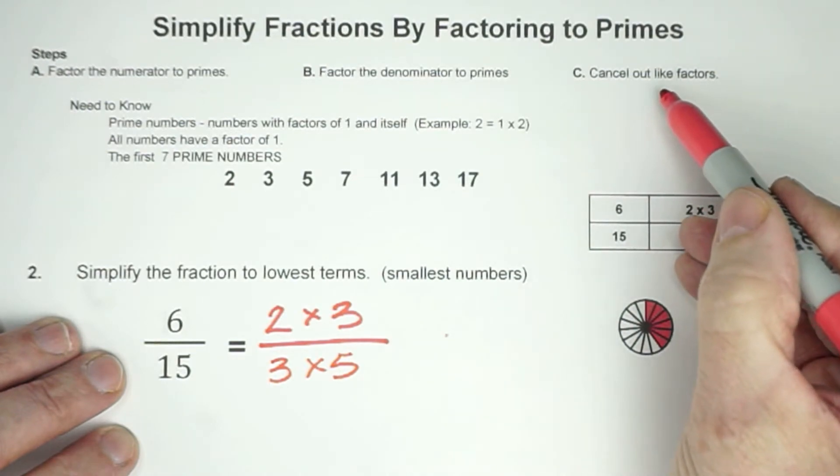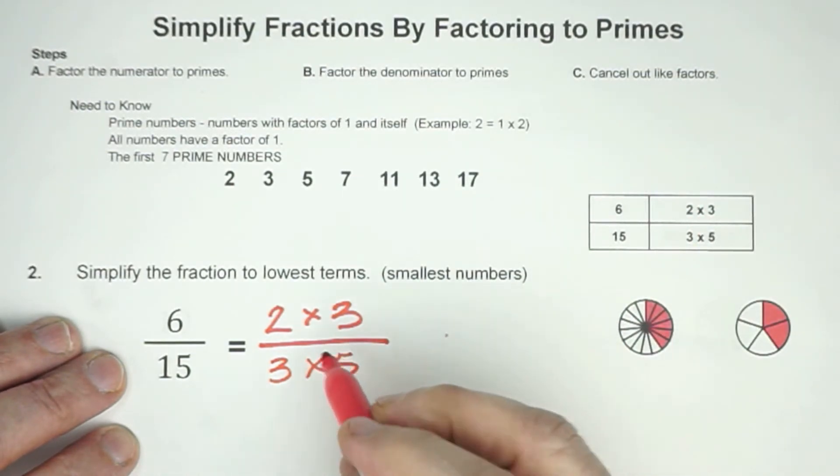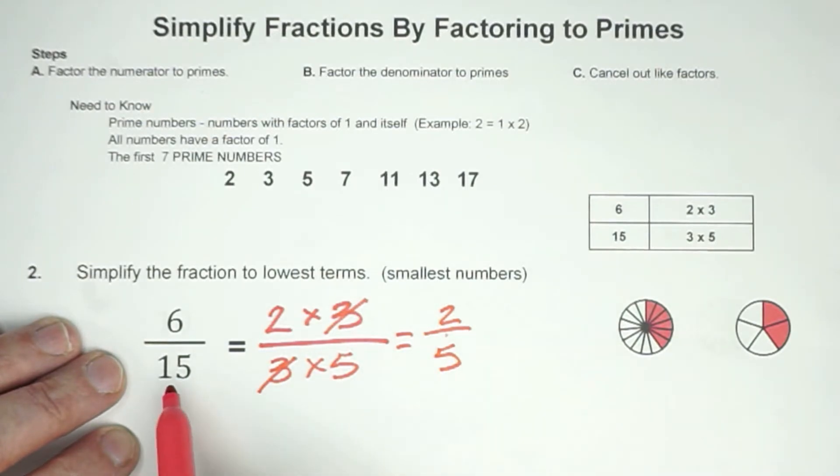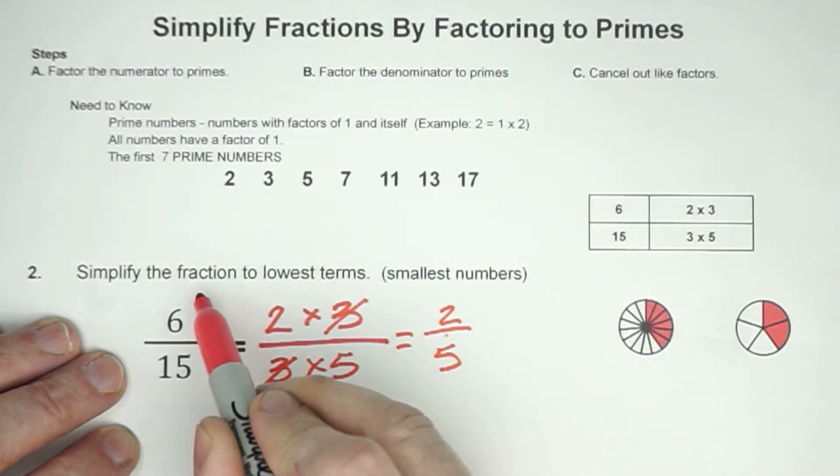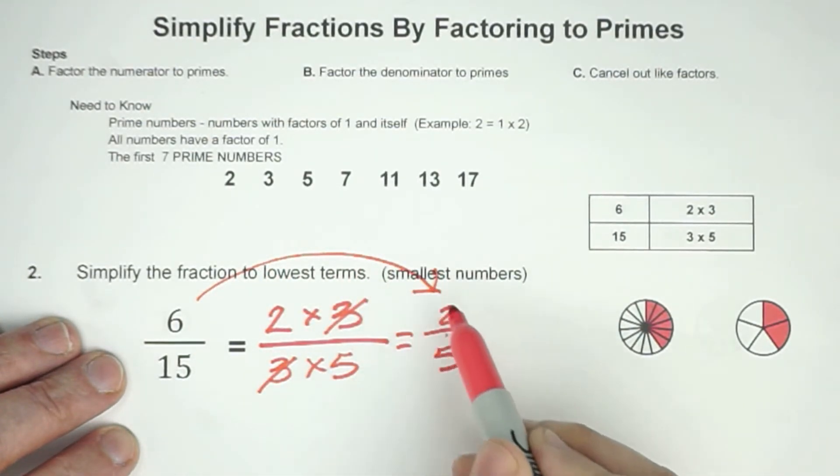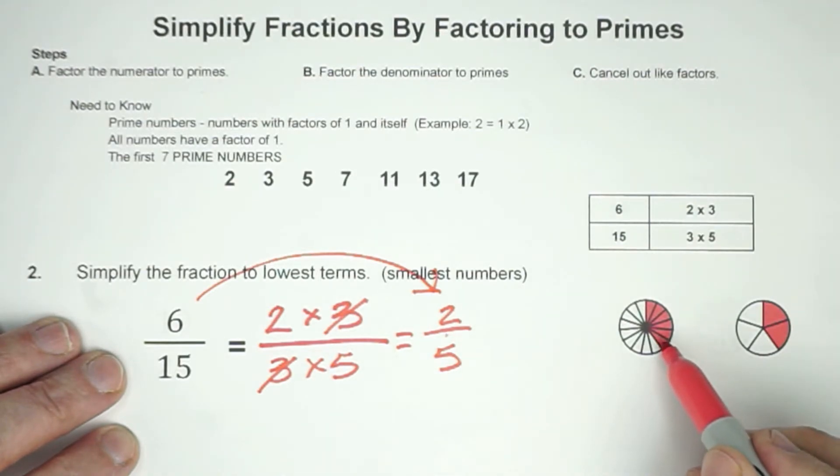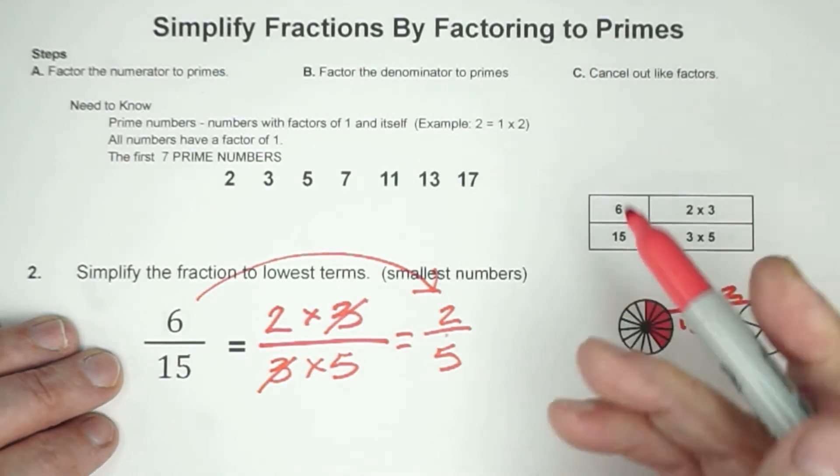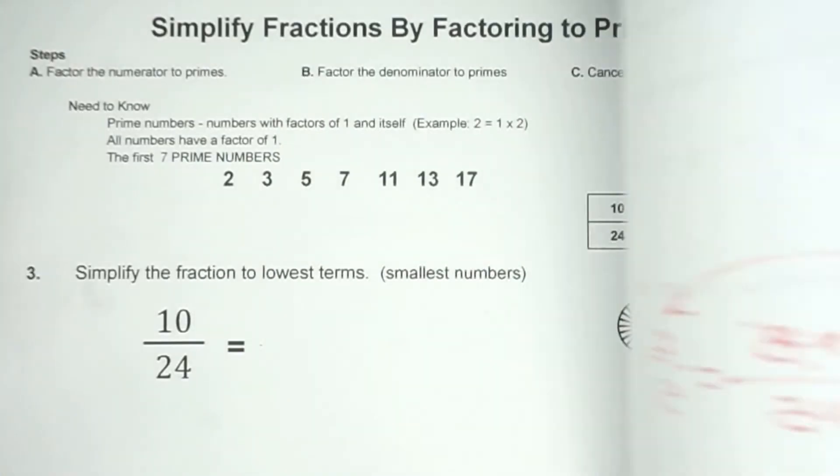Our step is to cancel out like factors. Well, I see that the 3 are alike, so I cross those out, that leaves 2 fifths. So in other words, 6 fifteenths simplifies to 2 fifths, and we're showing that here. 6 fifteenths would be equivalent to 2 fifths on that side, using a factoring to primes way of simplifying fractions.